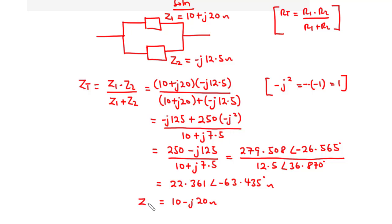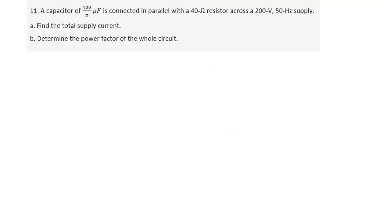Therefore, the combined impedance ZT equals 10 minus J20 ohms. Now let's move on to Question 11. A capacitor of 400 over pi microfarads is connected in parallel with a 40 ohm resistor across a 200 volt, 50 hertz supply. Find (A) the total supply current, and (B) determine the power factor of the whole circuit.